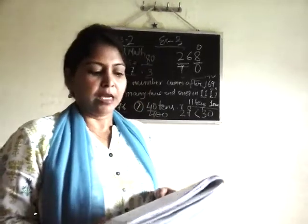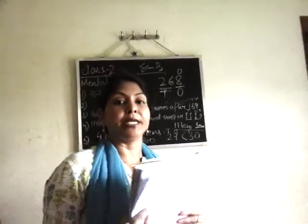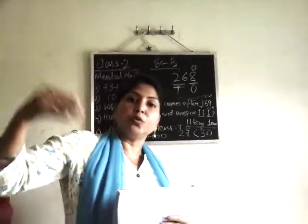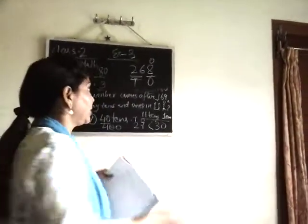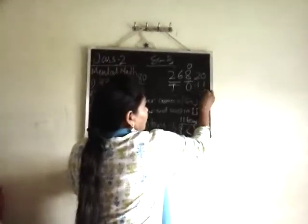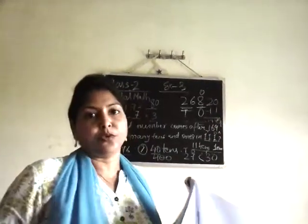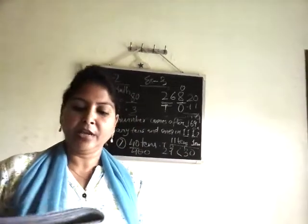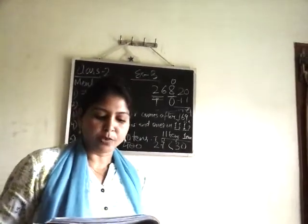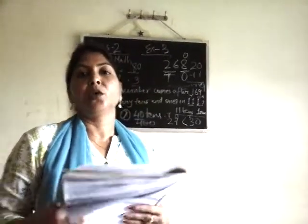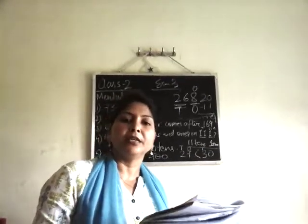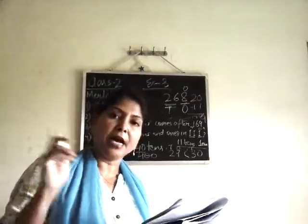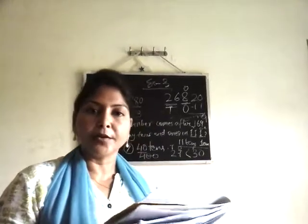Question 8: dash plus 11 equals 20. How much do you add to 11 to make 20? You can do forward counting or subtract 20 minus 11, which gives 9. Question 9: 55 plus 5 — just add 5 more to 55. The last question: 100 plus 4 tens plus 3 ones in compact form. In ones place write 3, tens place write 4, hundreds place write 1 — the answer is 143.